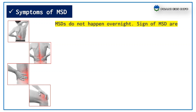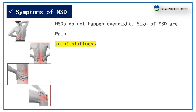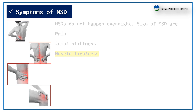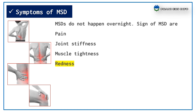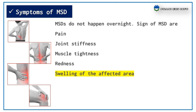Symptoms of MSD. Musculoskeletal disorders do not happen overnight. Signs of MSDs are: pain, joint stiffness, muscle tightness, redness, and swelling of the affected area.